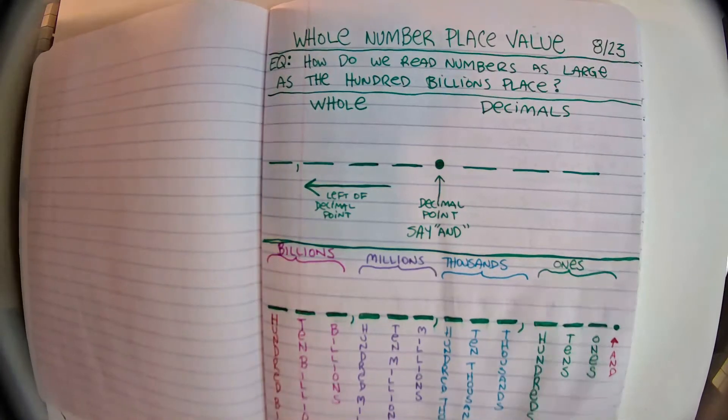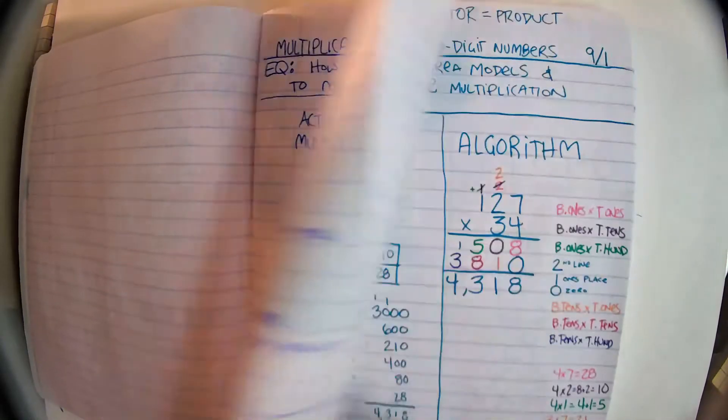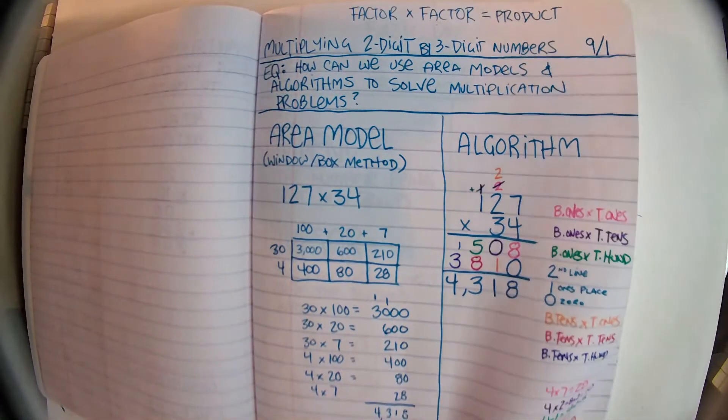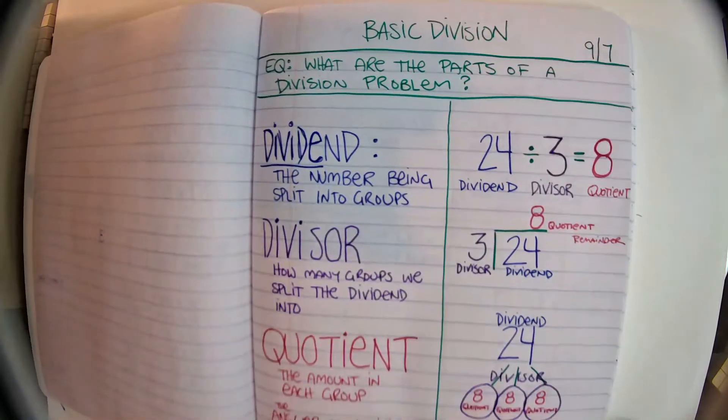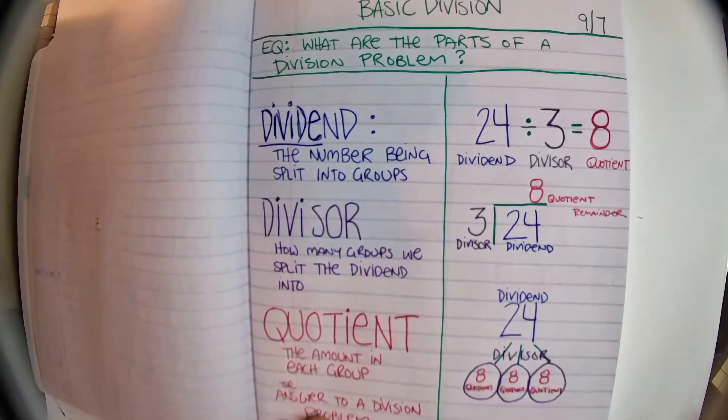Blank, kind of. Whole number place value. Estimation. Multiplication with zero straight. Multiplying two-digit by three-digit numbers. Basic division, which is coming back. Remember, dividend, divisor, and quotient.